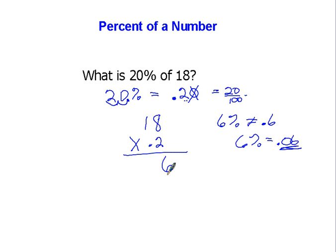8 times 2 is 16, carry the 1. 1 times 2 is 2, plus 1 is 3. 3, 6, but I've got to move the decimal point over one spot because there's one spot in the question. So 3.6 is my answer to this.